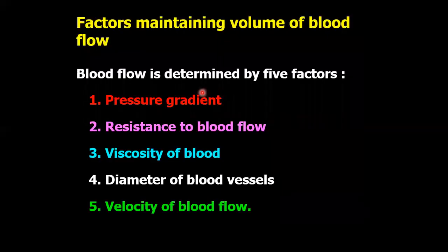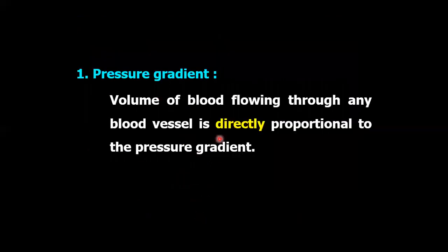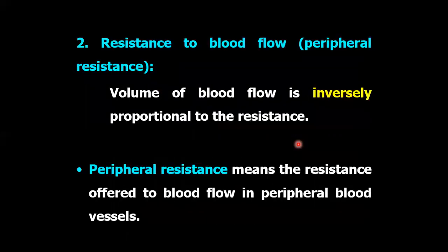Blood flow is determined by five factors: pressure gradient, resistance, viscosity, diameter of the vessels, and velocity. Regarding pressure gradient — the volume of blood flowing through any blood vessel is directly proportional to the pressure gradient. If pressure gradient is increased, then blood flow is increased. Regarding resistance — the volume of blood flow is inversely proportional to the resistance, meaning if resistance is increased then blood flow is decreased. Peripheral resistance means the resistance offered by the blood flow in peripheral vessels.